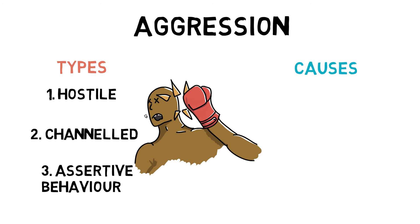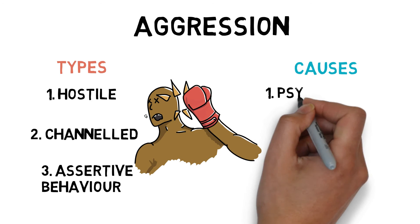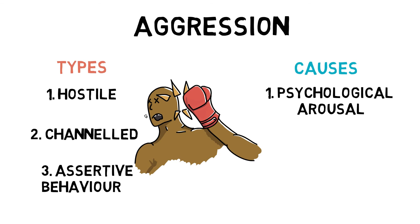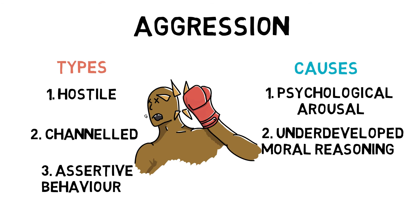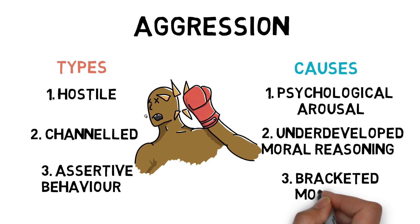The causes of aggression can usually be broken down into three categories. Psychological arousal, in which anger towards an individual or group causes an increase in arousal — this will usually happen if the individual is highly motivated, such as during a derby match. Underdeveloped moral reasoning, in which players with lower moral reasoning are likely to be more aggressive. And bracketed morality, in which there is a double standard of accepting aggressive behaviour in sport but not in everyday life, such as in martial arts or boxing.